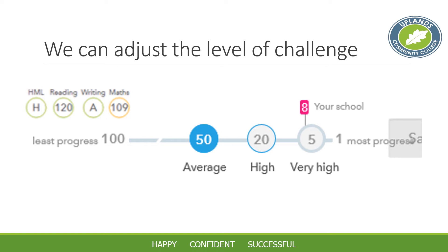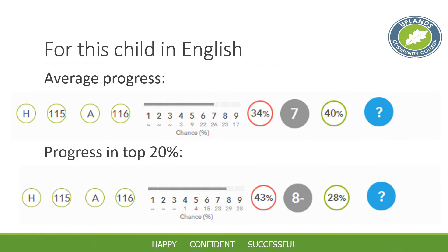We can set a level of challenge for students — either high or very high. We've found there's not a huge difference between the two, so we use the 20th centile: what the top 20% of students with similar starting points would achieve. Nationally, that's recognised as good performance. If they meet that top 20% ambition by the end of Year 11, they're considered to have done very well. For this student, average progress was a grade 7, but increasing to the top 20% challenge raises the target to an 8.